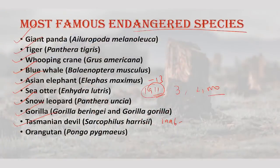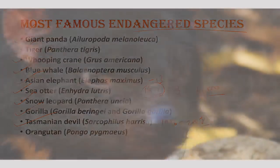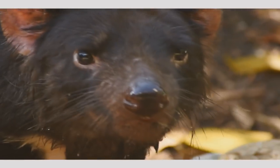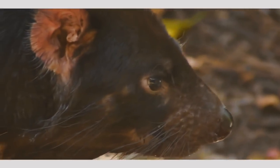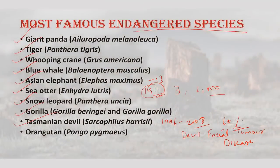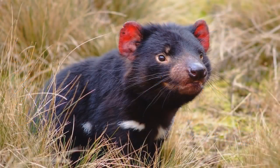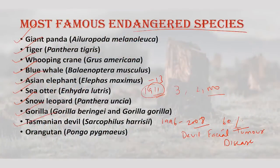Next is the Tasmanian devil. Between 1996 and 2008, the population of Tasmanian devils dropped by some 60% due to a contagious cancer known as devil facial tumor disease. It continues to decimate populations of the species, which only occurs on the Australian island of Tasmania. There are only around 10,000 wild individuals remaining. Captive breeding of uninfected individuals has been instituted and efforts have been made to develop a vaccine for the cancer.